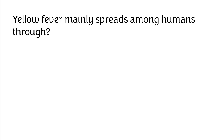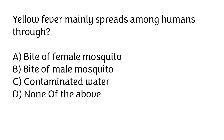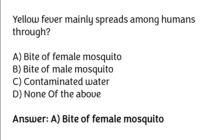Yellow fever mainly spreads among humans through: bite of female mosquito, bite of male mosquito, contaminated water, none of the above. The correct answer is option A: Bite of female mosquito.